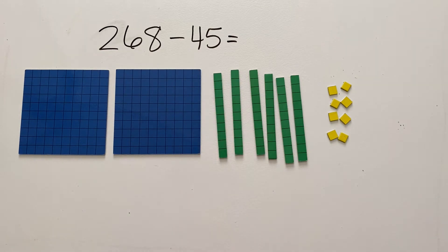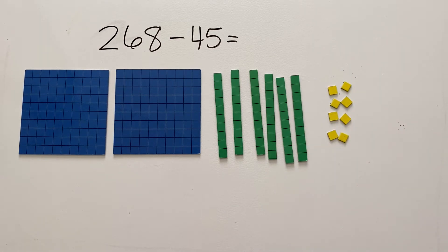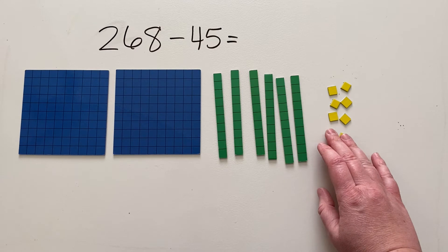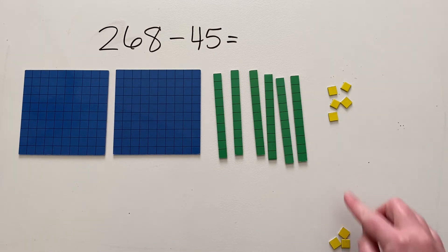So if I look first in my ones place, I have 8 ones and I'm going to subtract 5 ones. So I'm just gonna move them out of the way. So 1, 2, 3, 4, 5.